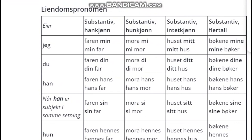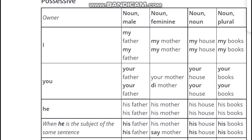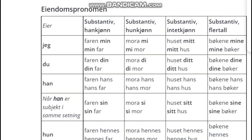The next one is eiendompronomen, which means possessive pronouns. Possessive is like 'my' — that's a possessive thing. My pen, my book, my father, my mother — that's all possessive pronouns.